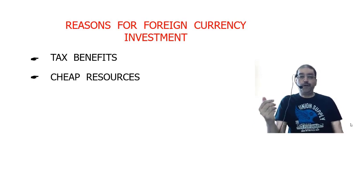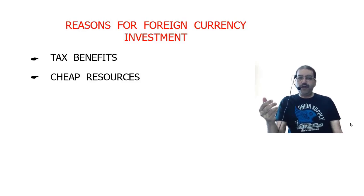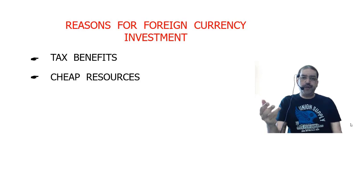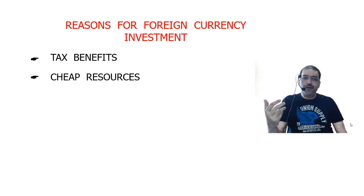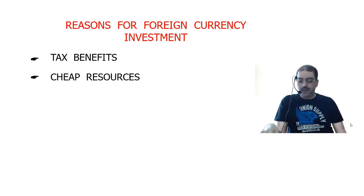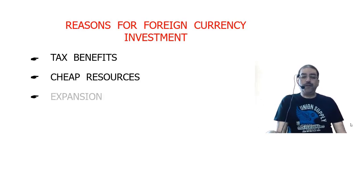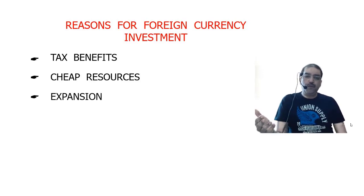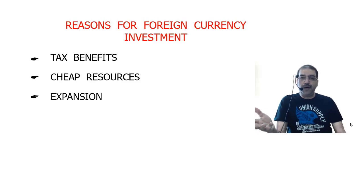Second reason is cheap resources. Labour may be easily and cheaply available — for example, labour is quite cheap in China and Taiwan, which is why most products are manufactured there. Or it may be that I want to expand my business, so expansion may be one of the reasons for setting up a business unit in another country.